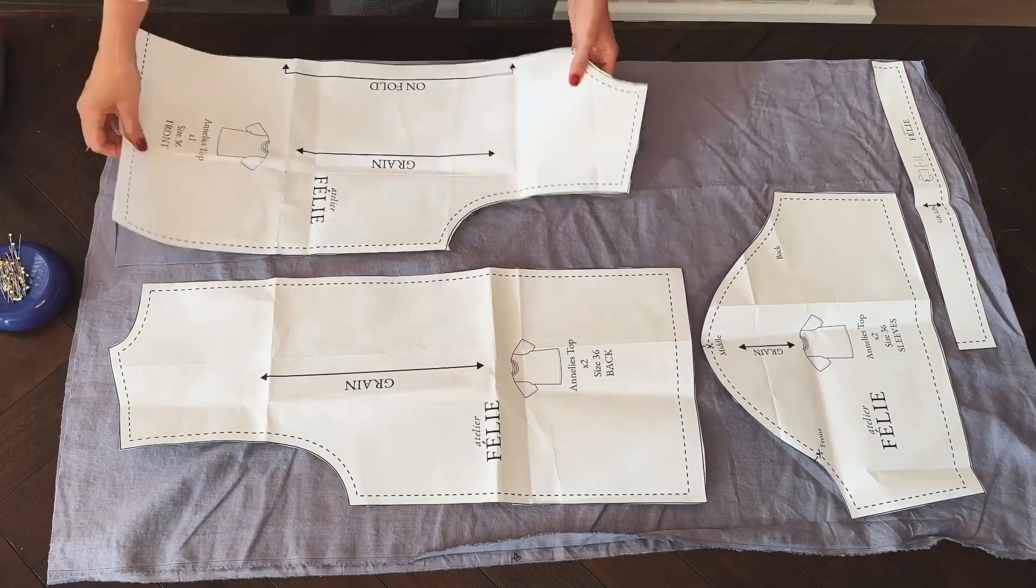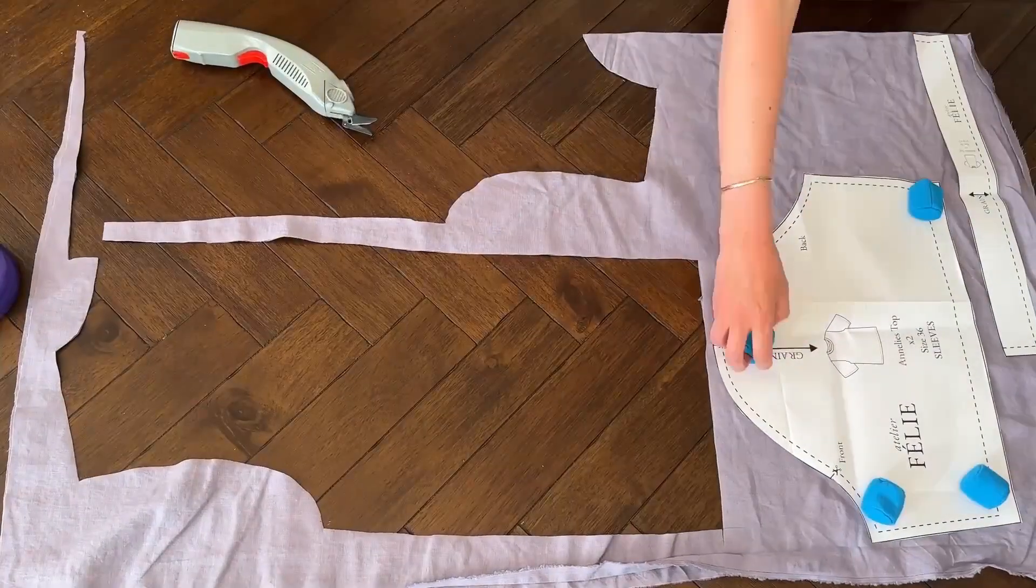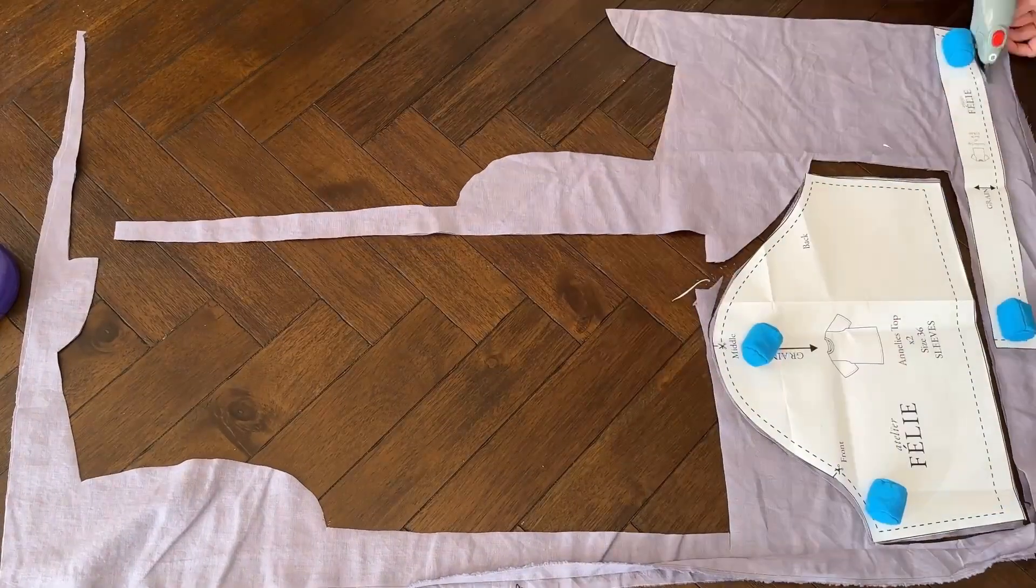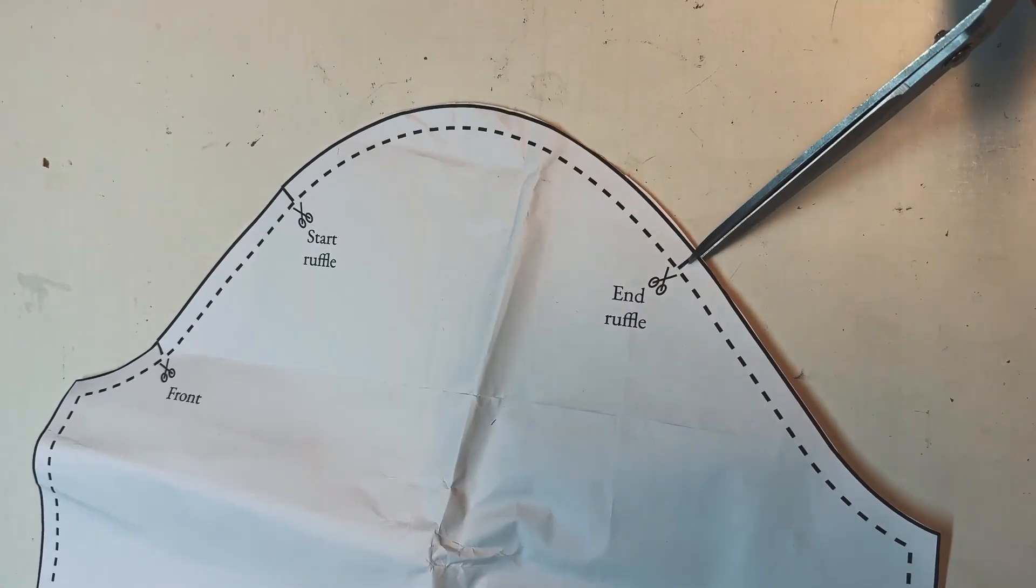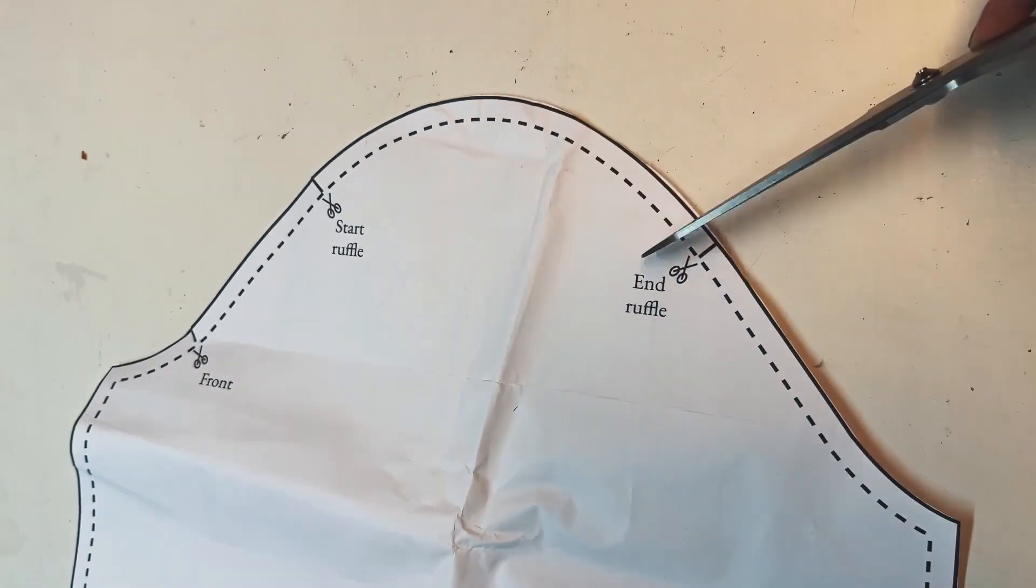Now we're going to cut around the pattern. I always use electric scissors. Use regular scissors to make half a centimeter cuts at the notches on the sleeve pattern for future identification.